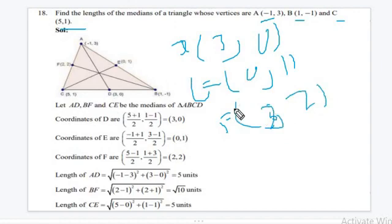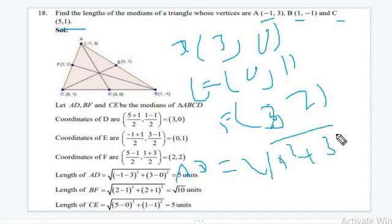So the values of D, E, and F are given. We have to find the length of the medians. How will you find the length of a median? From the distance formula we can write: (-1-3)² that is 4 whole square plus 3 whole square, which equals 5.